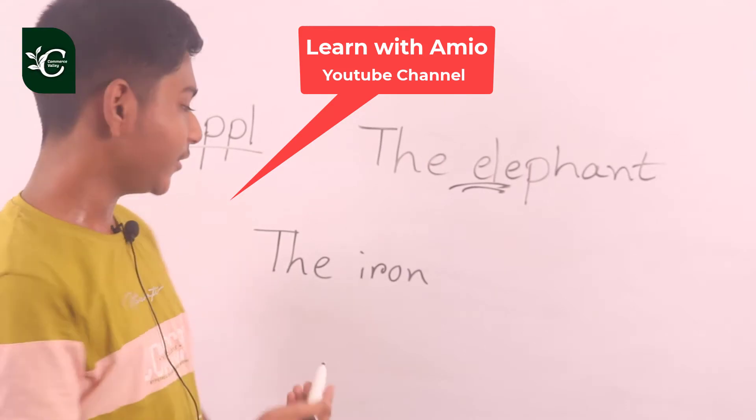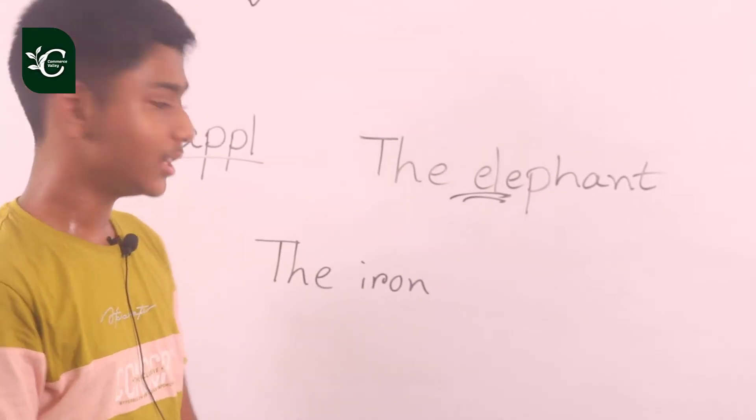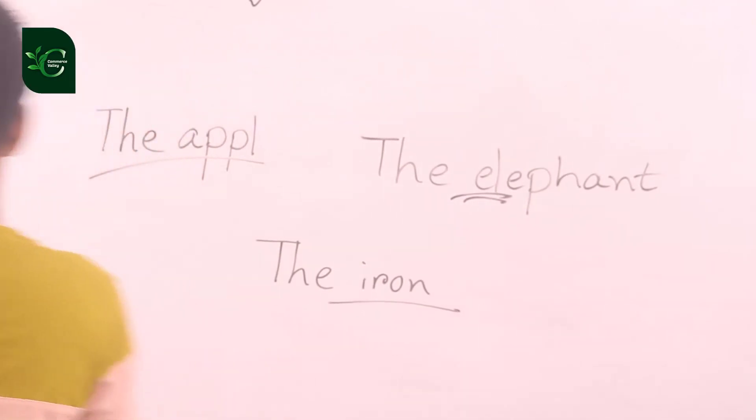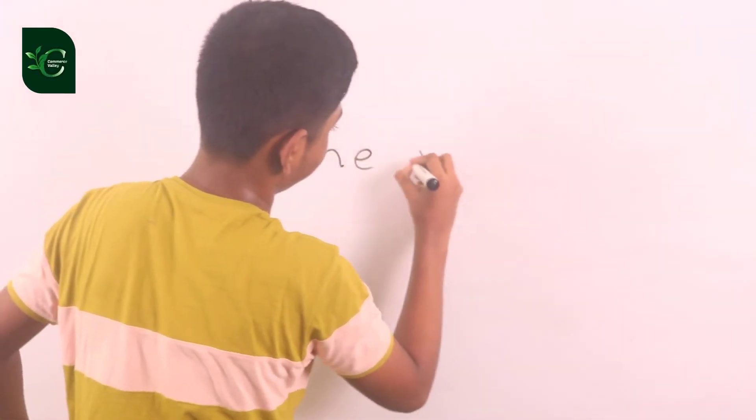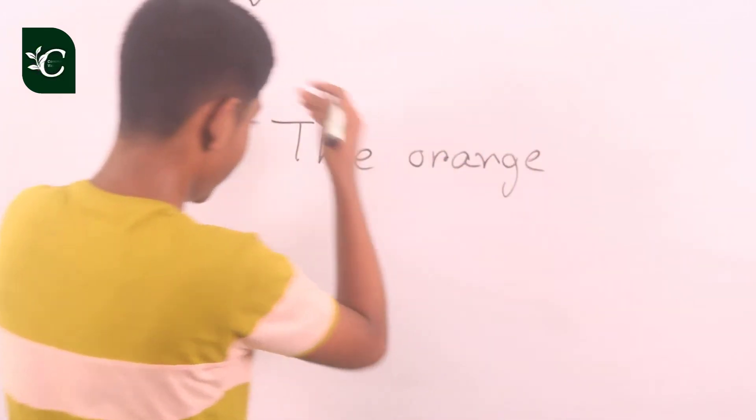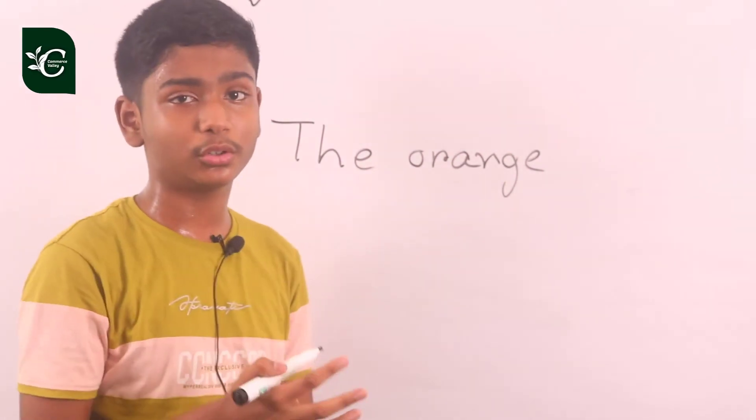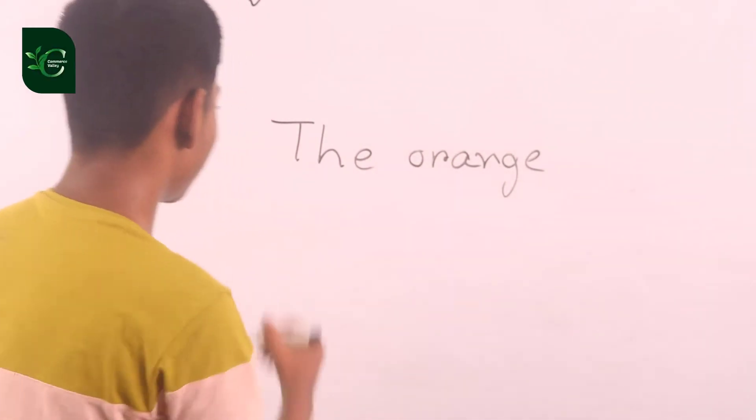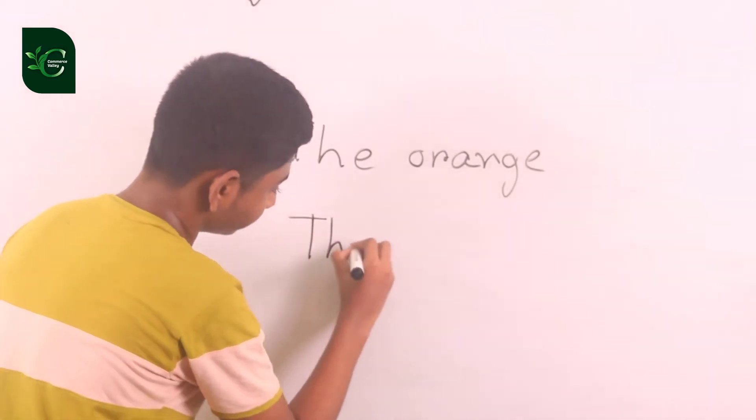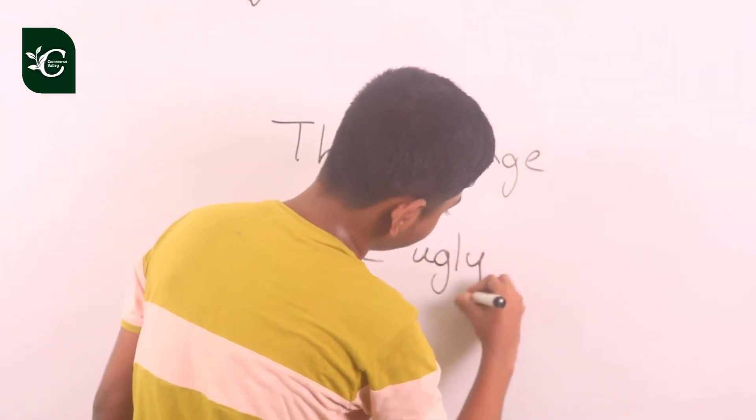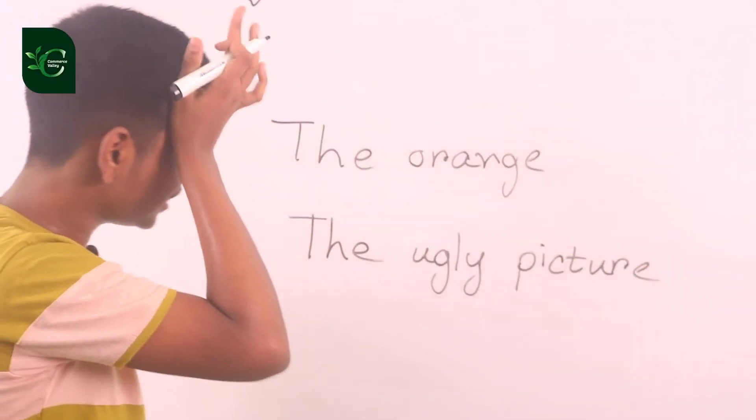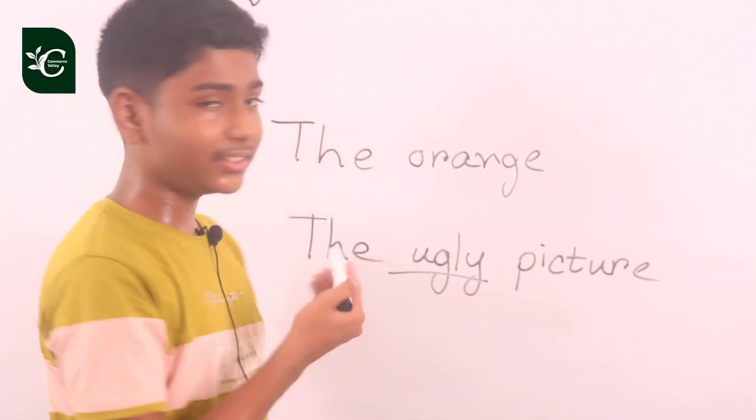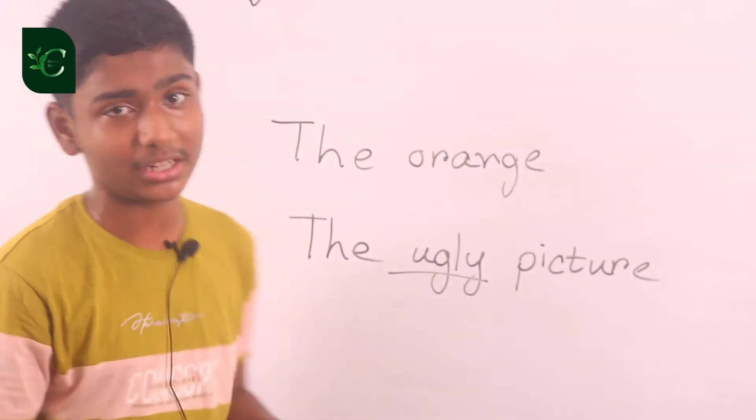If the apple is called the apple, then we use 'the'. The apple, a lamb. Now let's take another example, the orange. So one example is the apple, the other is the orange.